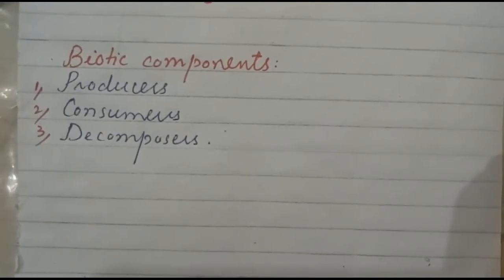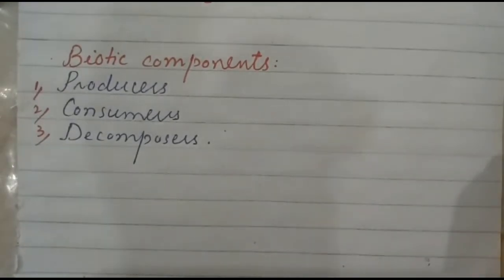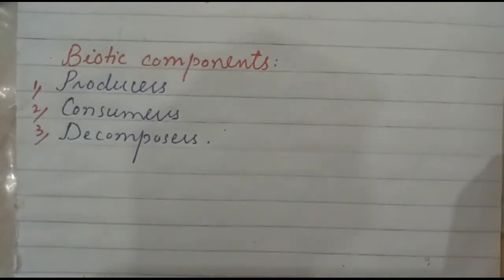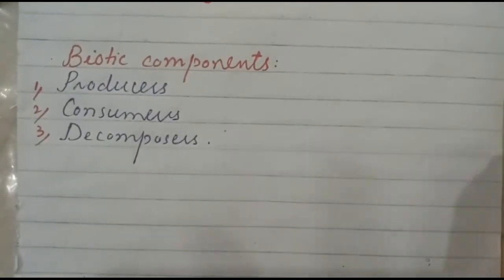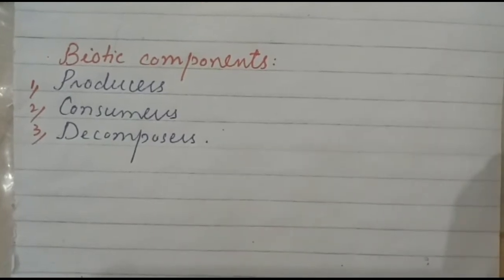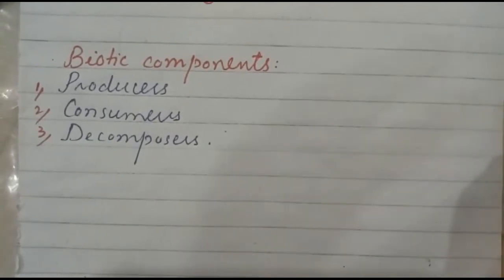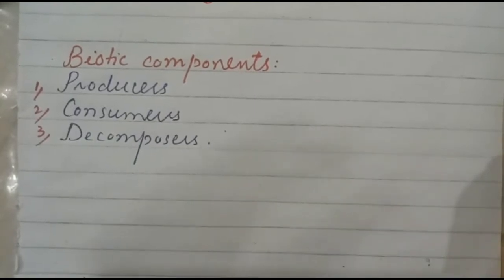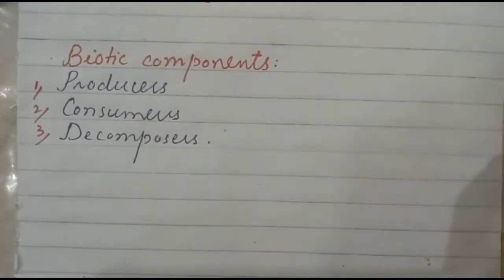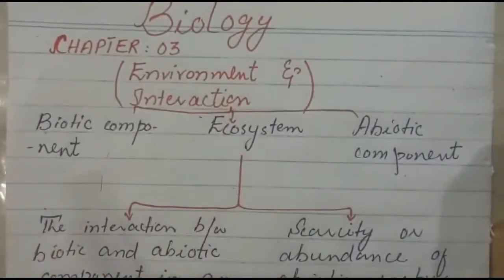During the decay and decomposition process, the material from a human body or plant turns into humus in the soil. This humus contains mineral salts which are very beneficial for further plant growth. Plants absorb these minerals through photosynthesis, and good decomposition leads to better plant growth.